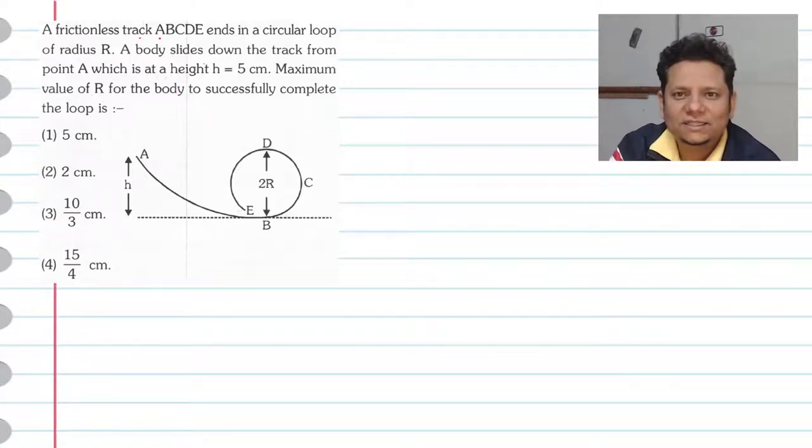Next question. The question is a frictionless track ABCDE. So A, B, C, D, E. All right.